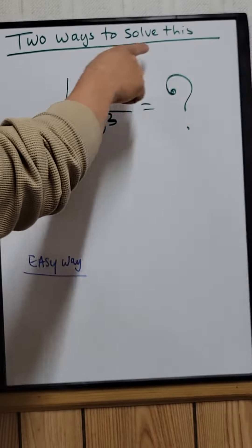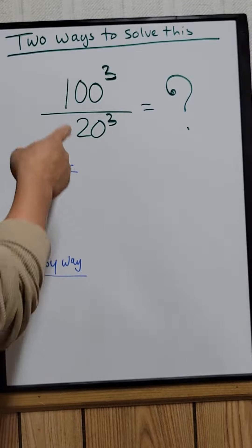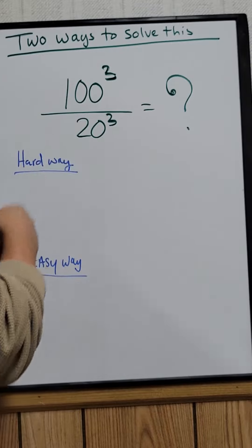There's two ways to solve this problem right here. 100 cubed divided by 20 cubed.